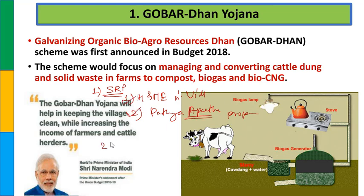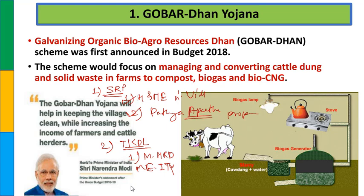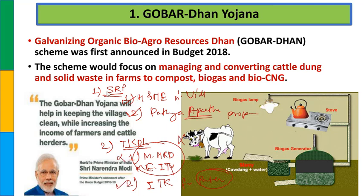बिल्कुल सही जवाब है - दोनों statements ही सही हैं. दूसरा statement है: which of the following statements are correct regarding Traditional Knowledge Digital Library? पहला statement - this is a joint collaboration under Ministry of HRD and Ministry of Electronics and Information Technology. दूसरा statement - this scheme used to protect Indian traditional knowledge from wrongful patents. Ministry गलत है, इसलिए पहला statement गलत है और दूसरा सही है - only two is the correct answer.